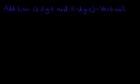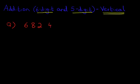Hello and welcome to the tutorial on Addition. In this tutorial we will learn how to add a six digit number with a five digit number and we will do this using the vertical format. So let's have a look at the question we are going to be working through. What is 682,439 plus 47,865?